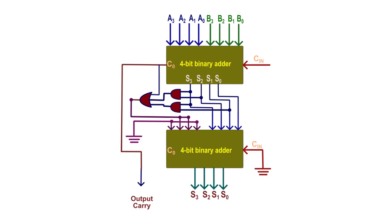We construct the BCD adder using two 4-bit adders. The inputs and carry-in are connected to the first adder. When the sum goes beyond valid BCD or a carry is generated, the logic takes care of adding 0110. The outputs are the final sum S0, S1, S2, S3 and the final carry.